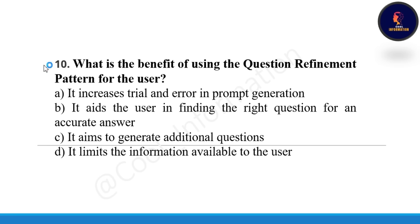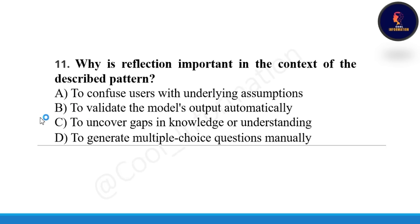Next question: What is the benefit of using the question refinement pattern for the user? These questions are from unit 2 or 3, covering prompt engineering. The correct option is B — it aids the user in finding the right question for an accurate answer. Next: Why is reflection important in the context of the described pattern? The correct option is C — to uncover gaps in knowledge or understanding.